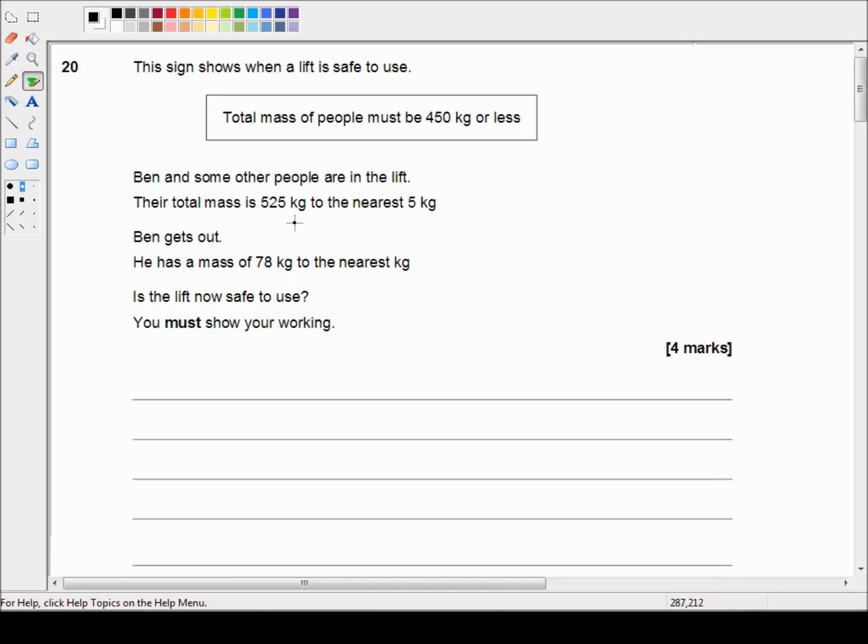Okay so Ben and his friends weigh 525 kilograms to the nearest five kilograms. Well 5 divided by 2 equals 2.5. So 525 kilograms to the nearest five kilograms means 525 kilograms plus or minus 2.5 kilograms.